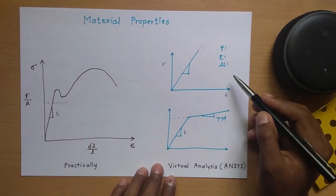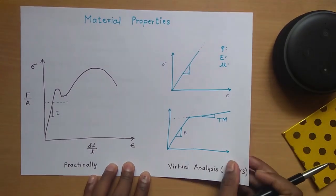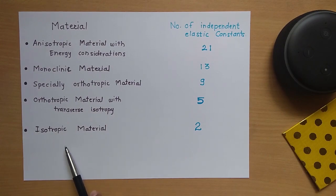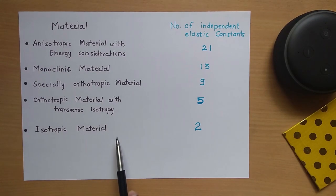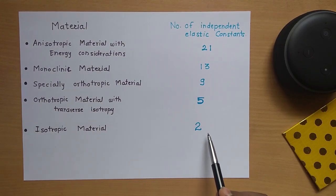In this linear analysis, we use two constants. We will now see how many constants are required to define a material. Metals are isotropic materials, meaning the properties of the metal are the same in all directions — the XY plane, YZ plane, and ZX plane. So we need only two elastic constants: E (Young's modulus) and Poisson's ratio. The remaining constants can be calculated from these two values.